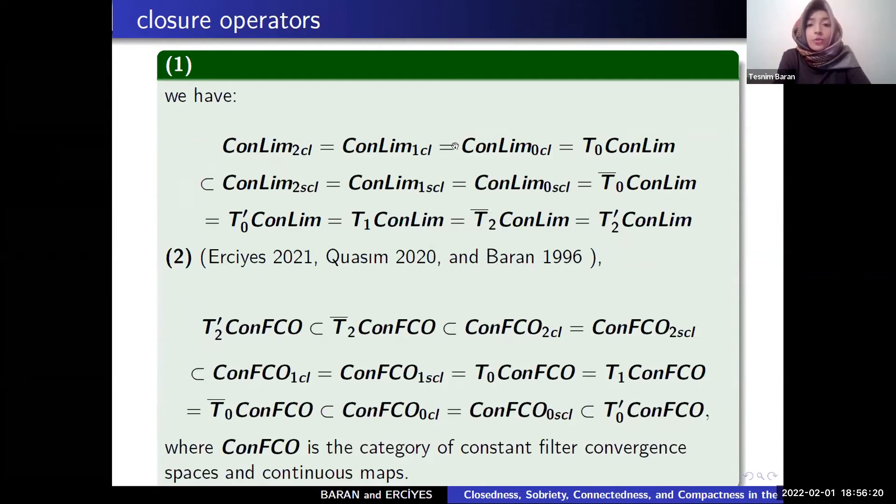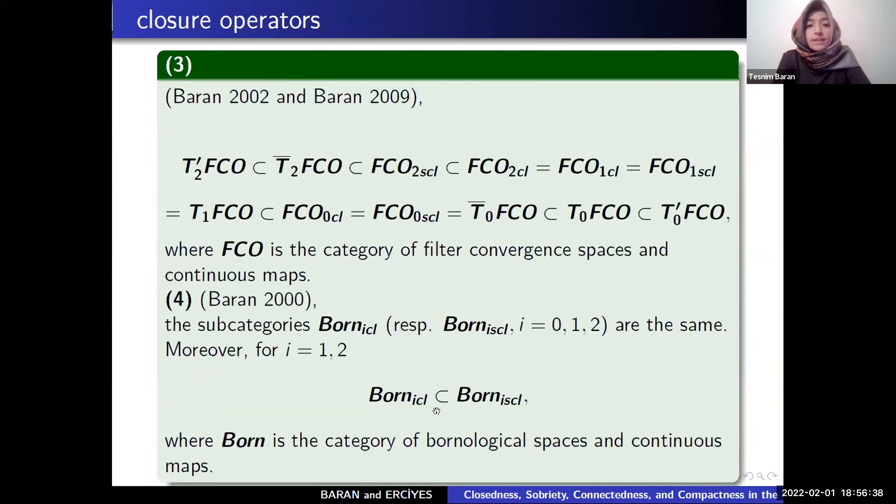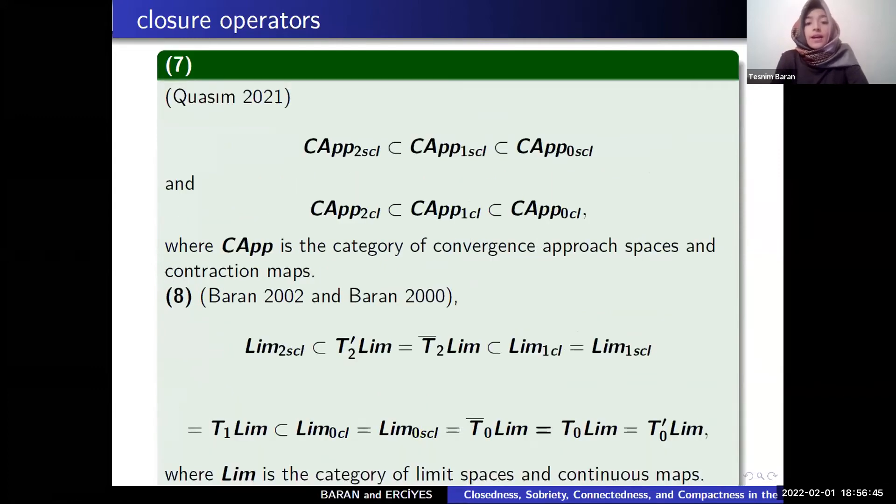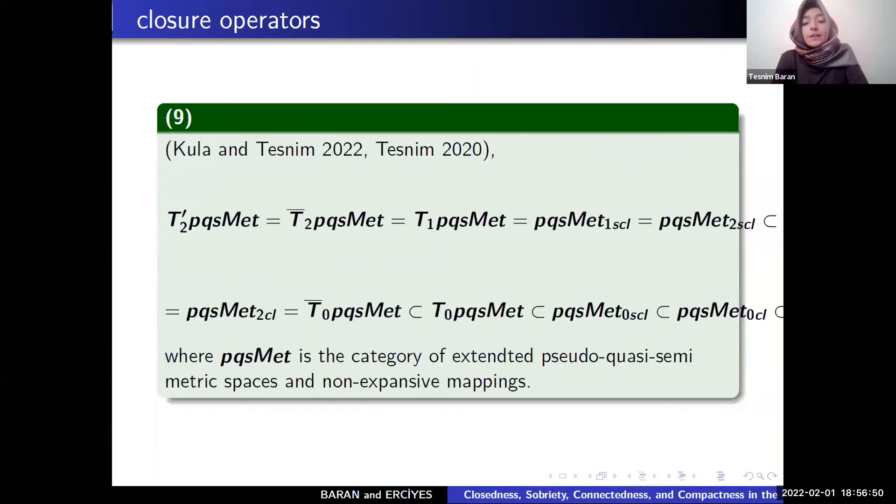They are equivalent subsets and they are equivalent. And some other researchers study other categories: con-FCO, constant filter convergence space, filter convergence space, bornological spaces, pre-order space, convergent approach space, limit space, and PQ-Sumet, a category of extended pseudometric spaces.